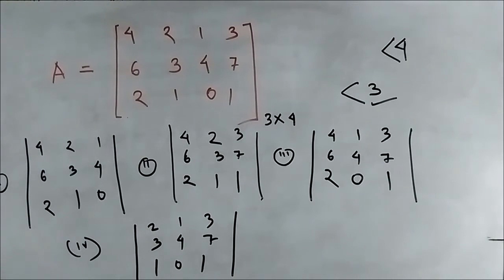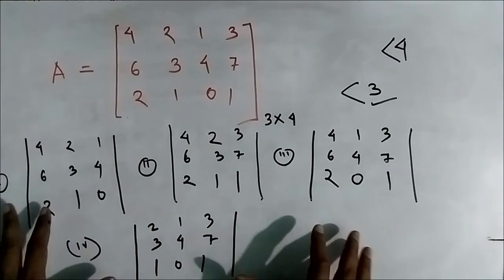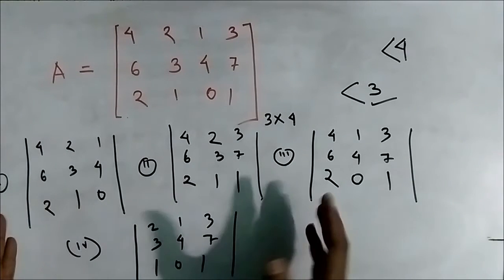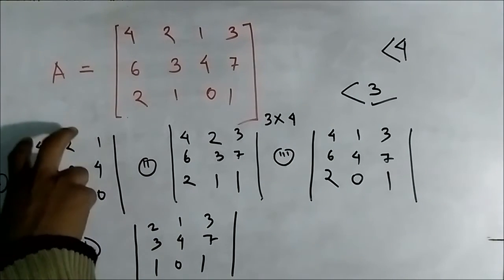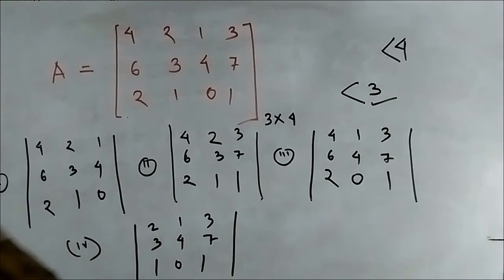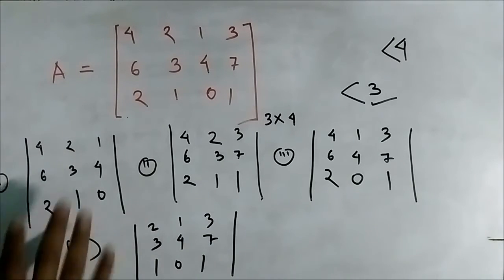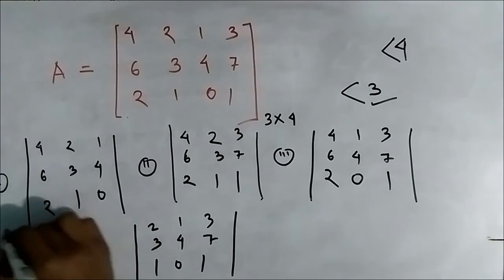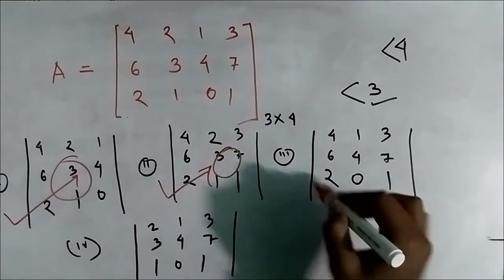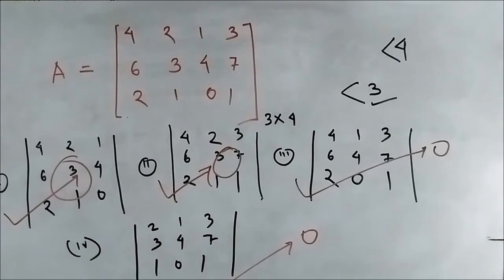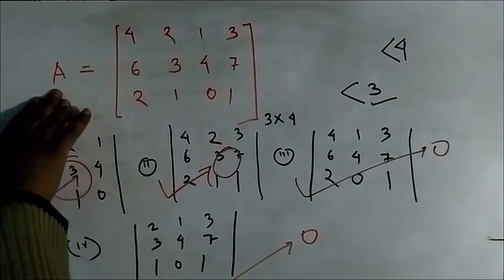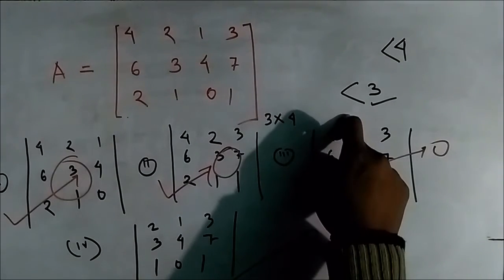To calculate the determinant of any matrix, you find the cofactors and multiply each element of a row or column by its cofactor. You can pause the video and calculate the determinants for all four 3×3 submatrices. The results are: the first submatrix has determinant 0, the second also has determinant 0, the third also has determinant 0, and the fourth also has determinant 0.